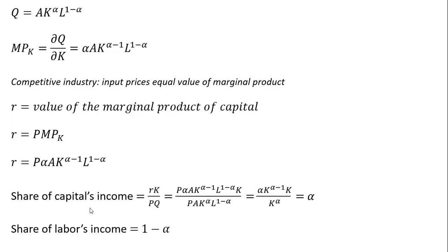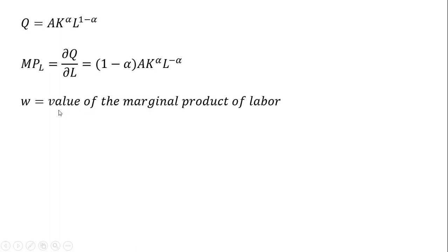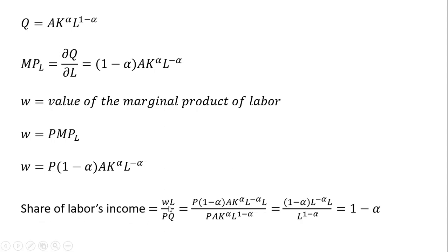If you want to show the share of labor's income a little more formally, follow me. Once again we start with the production function and get the marginal product of labor. We recognize that in the competitive market, the wage equals the value of the marginal product of labor — which is the price of the output good times the marginal product of labor. Making our substitution in for the marginal product of labor, and then going to the share of labor's income — W times L — for W I'm plugging in the value of the marginal product of labor, multiplied by L, and for Q we plug in the production function.